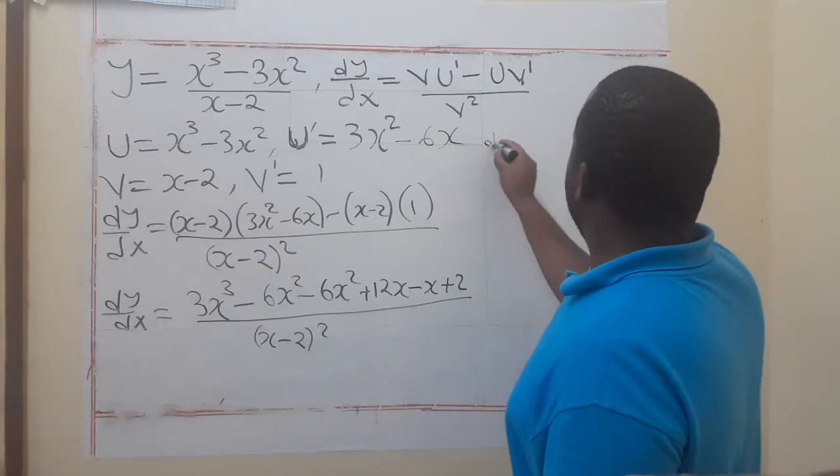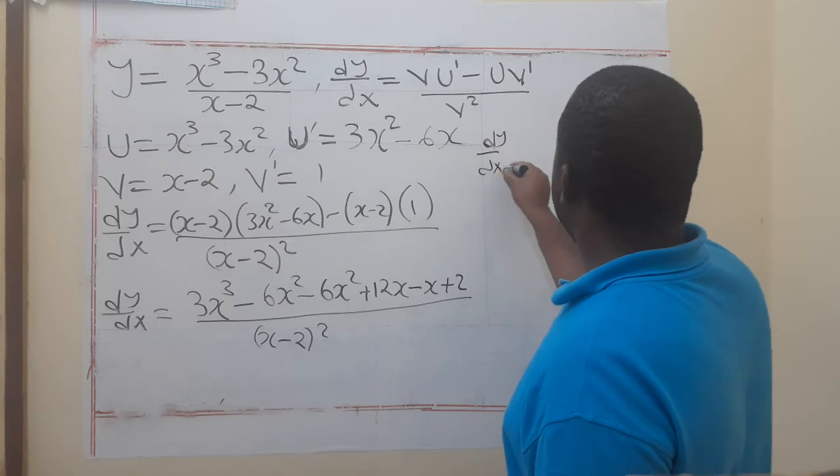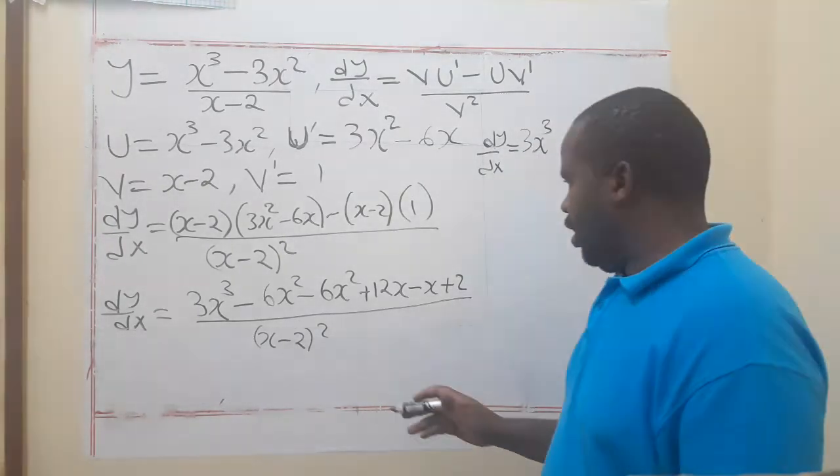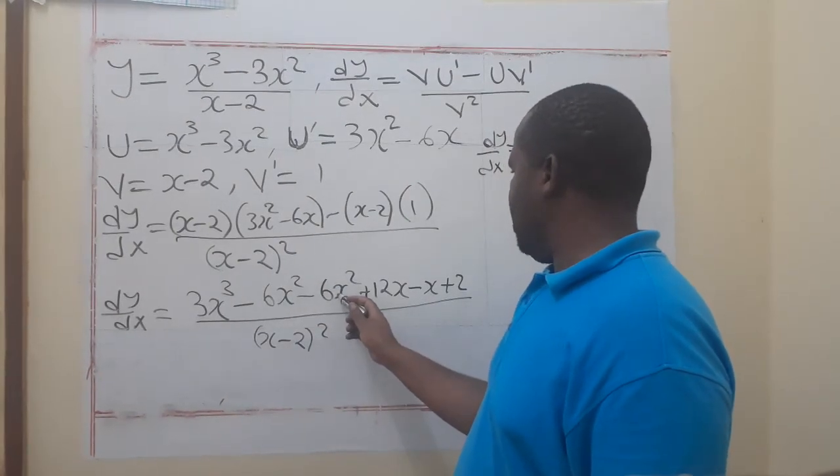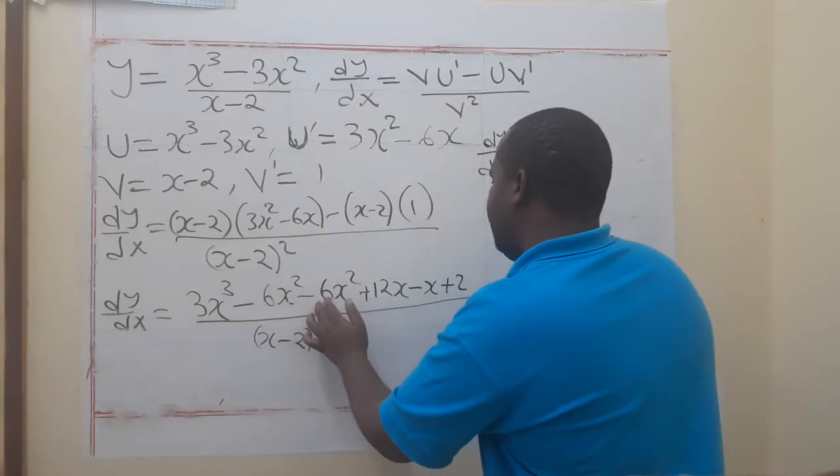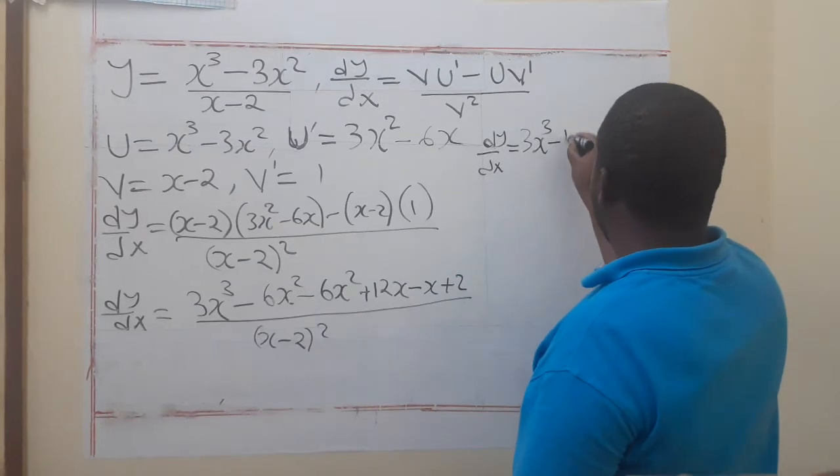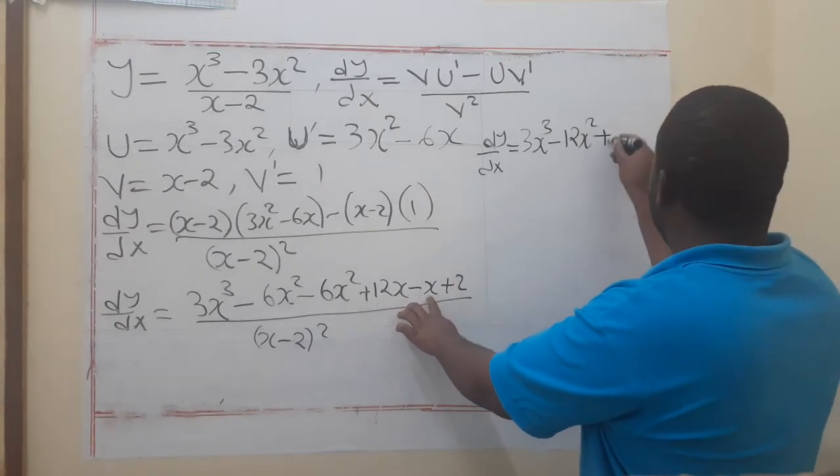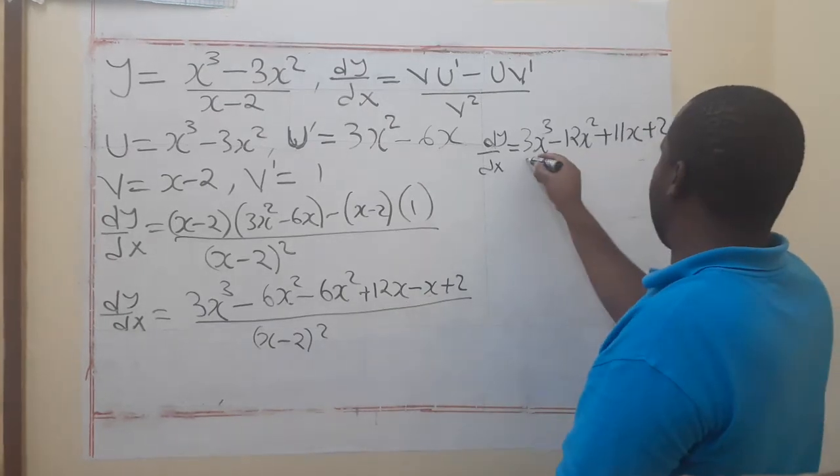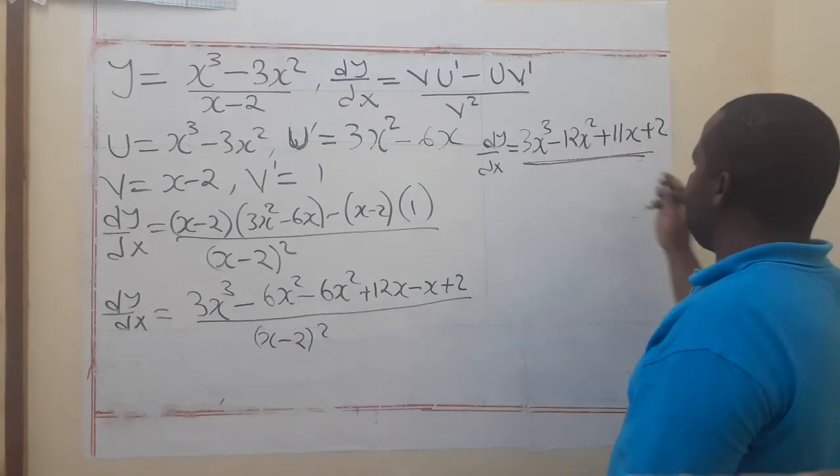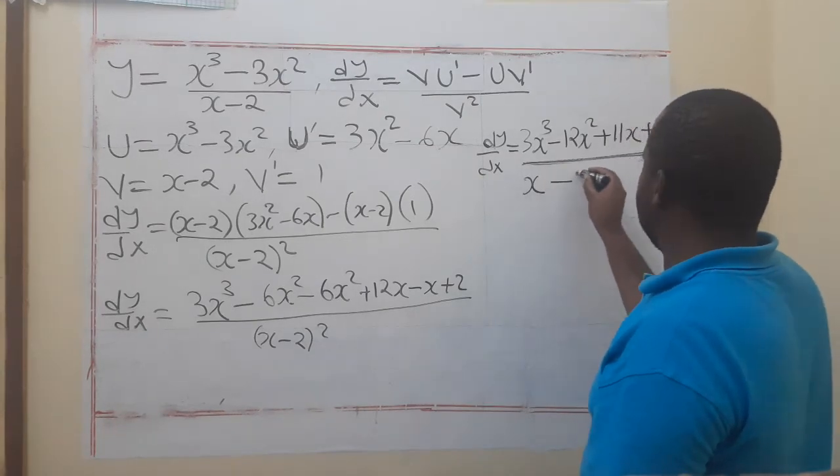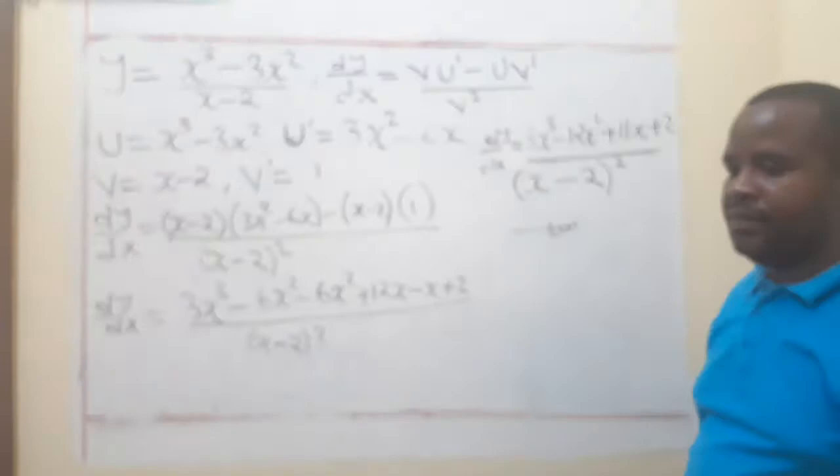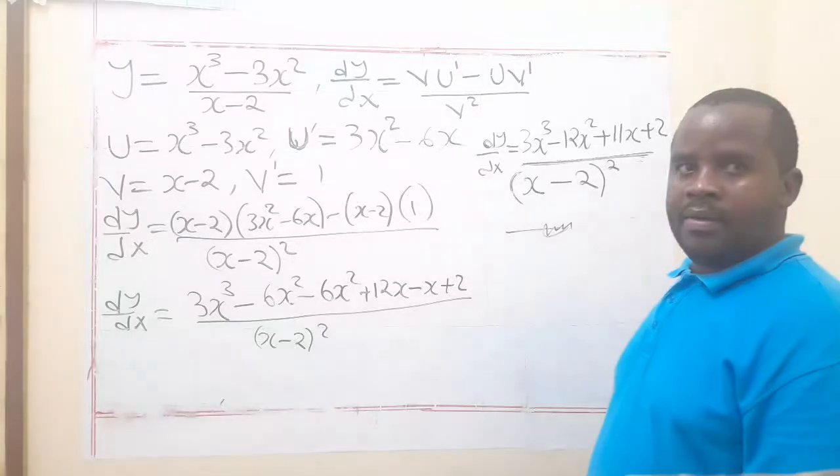Take note, this subtraction sign is for everything there. But when you multiply x minus 2 by 1 you get x minus 2, then you distribute the negative, so you have minus x plus 2. Everything here you divide by x minus 2 squared.